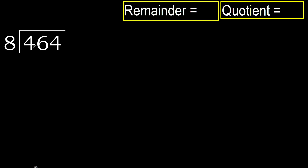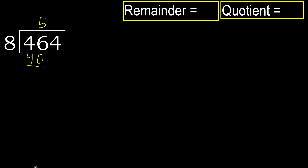464 divided by 8. 4 is less, therefore next 46. 46 is not less, therefore with 46 and 8, multiply by which number is nearest to 46 but not greater. Multiply by 6: 48 is greater. Multiply by 5: 40 is not greater. Subtract: 46 minus 40 is 6. Next.